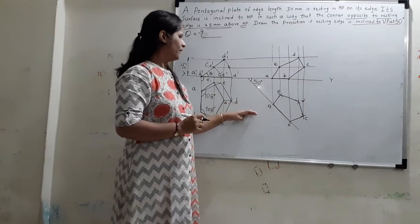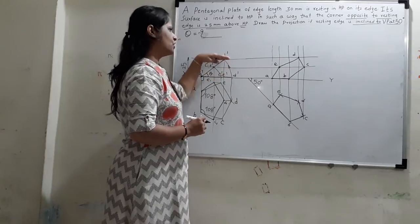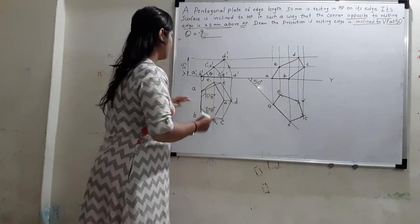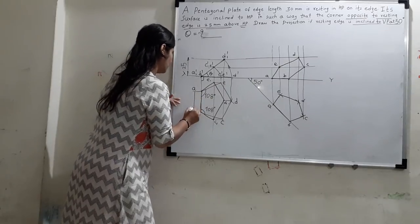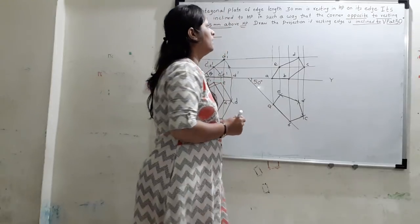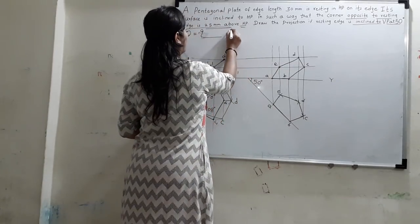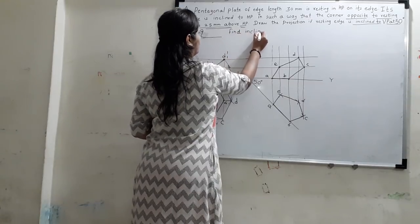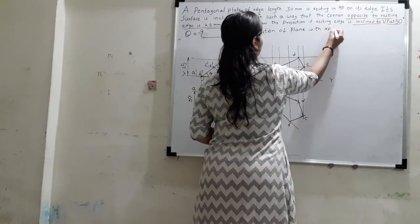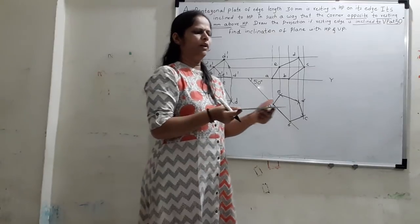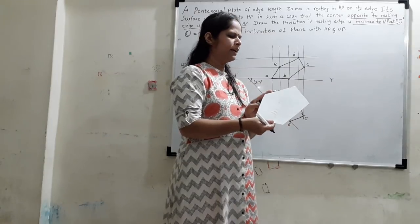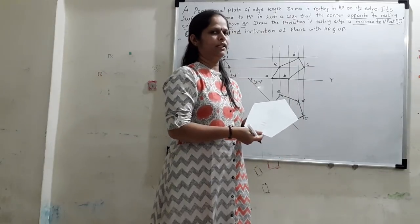This is the way to solve the problem when the corner is a given distance above HP. The same problem can be given for VP as well — in that case we draw the projection in the top view instead of the front view. Additional questions can be asked, such as: find the inclination of the plane with HP and VP. The plane is lifted by some distance and is inclined to VP, making some angle with HP and some angle with VP — we need to find both.